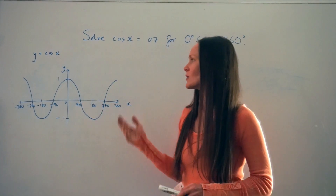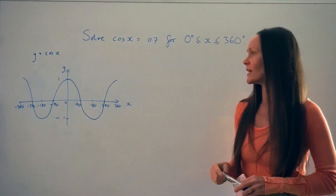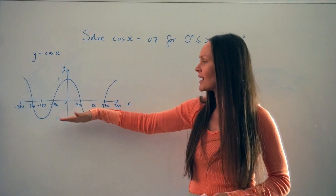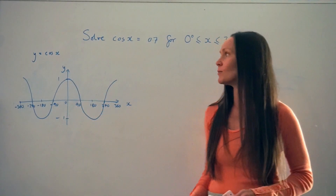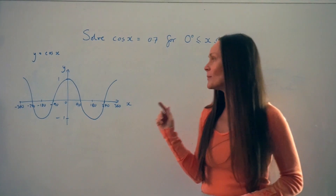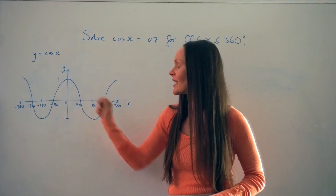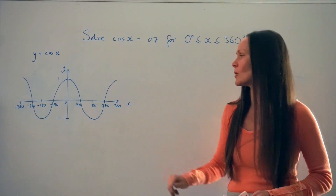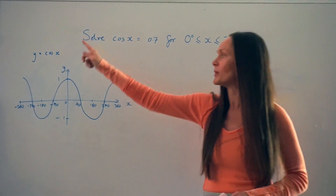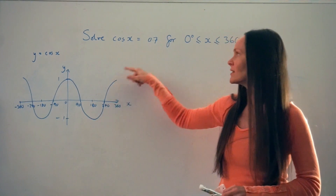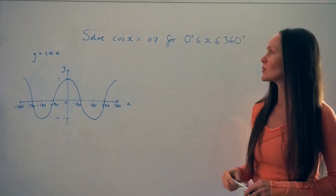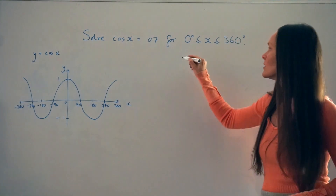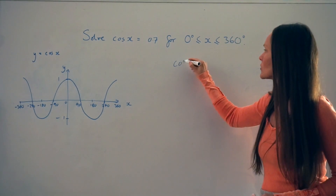It doesn't need to be as detailed as the one I've got here, but just bear in mind it goes up to 1 and down to negative 1 on the y-axis, and make sure you know where it intersects the x-axis — so here at 90, 270, and so on. It's just repeating itself, this graph y equals cos x. I'm going to start by writing down the equation from the question.